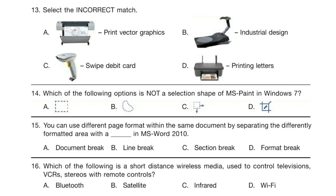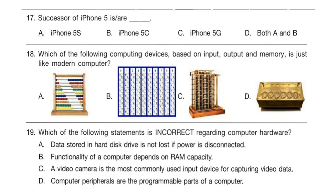Question 16. Question 17. Which of the following is a short-distance wireless media used to control televisions, VCRs, and stereos with remote controls? Select your answer and write it down. Question 17. The successor of iPhone 5 is or are dash.